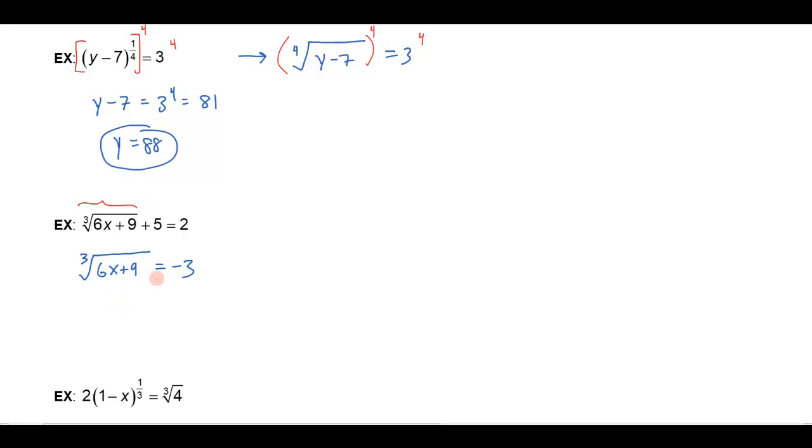Now, earlier when we were doing square roots, we did a problem where the square root was equal to a negative, and it turned out that we couldn't have a square root equal negative, but remember that I can take the cube root of something and have it equal a negative value, so I don't have that same issue or concern with cube roots that I had with square roots. To solve this, go ahead and cube both sides.